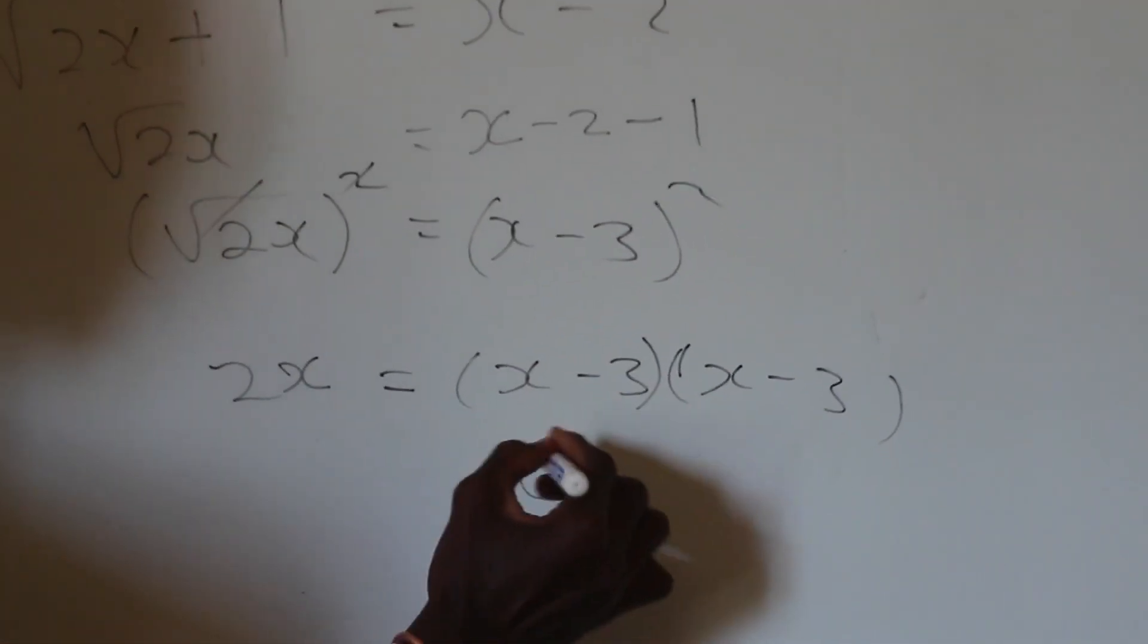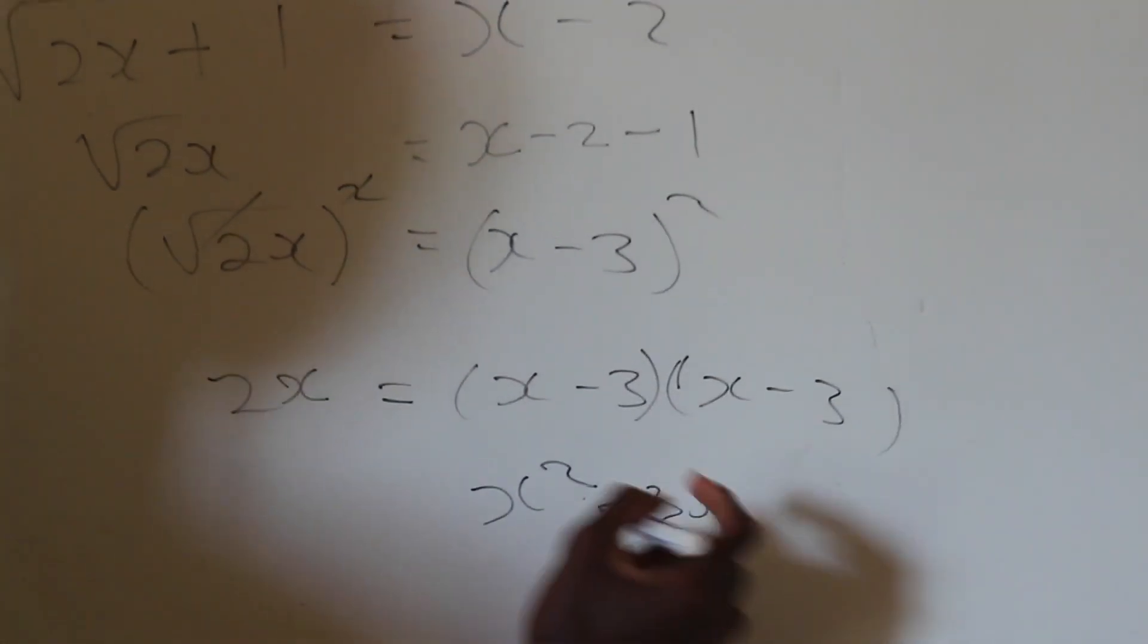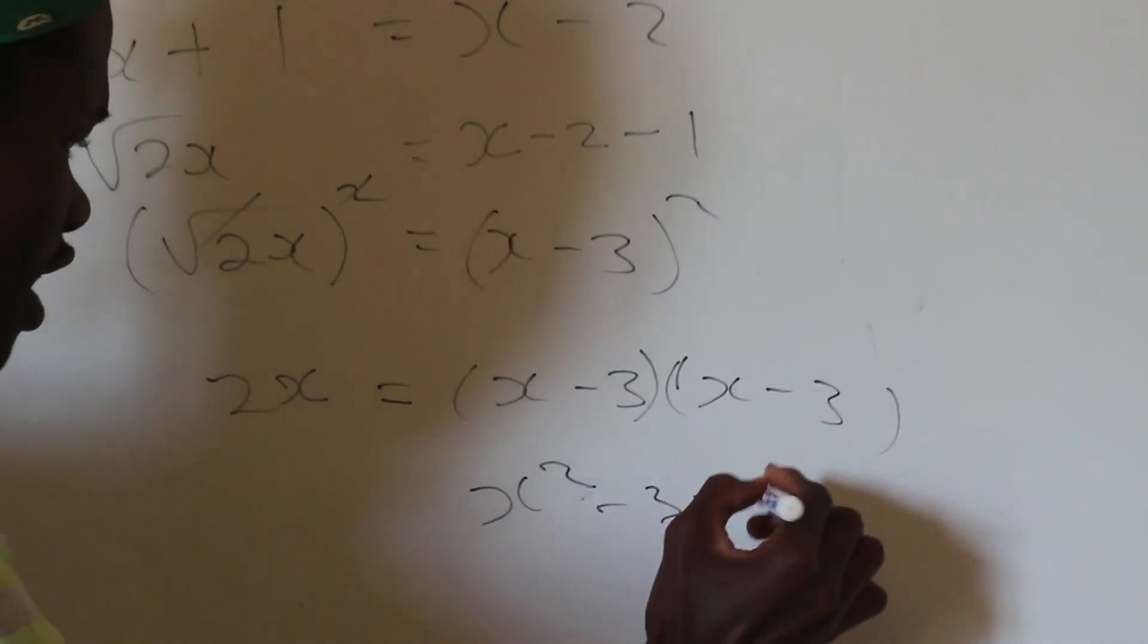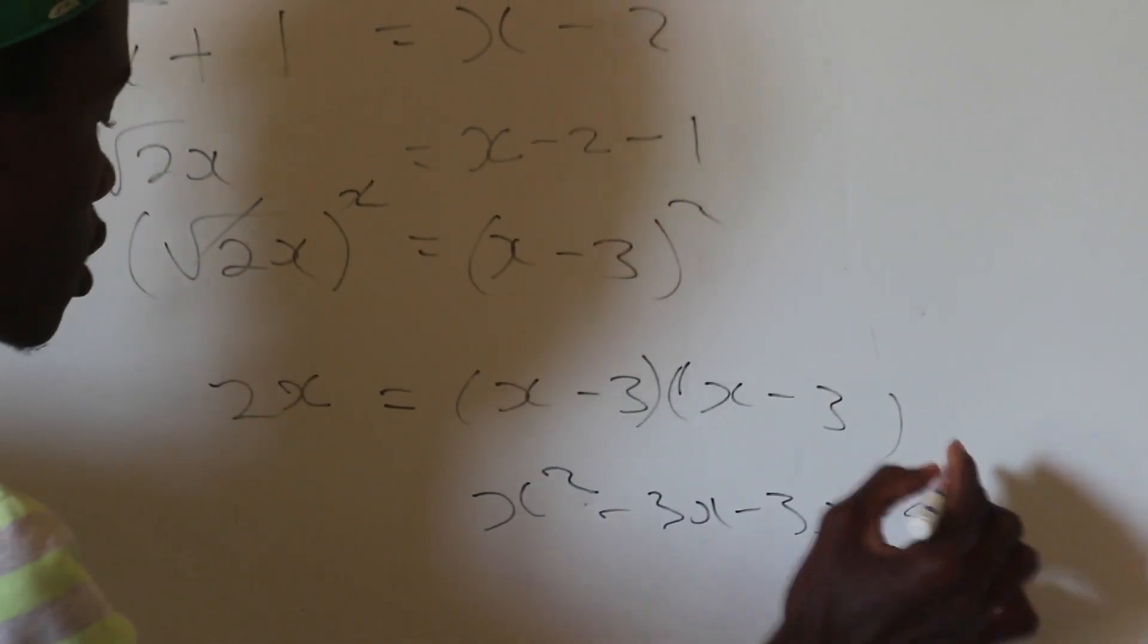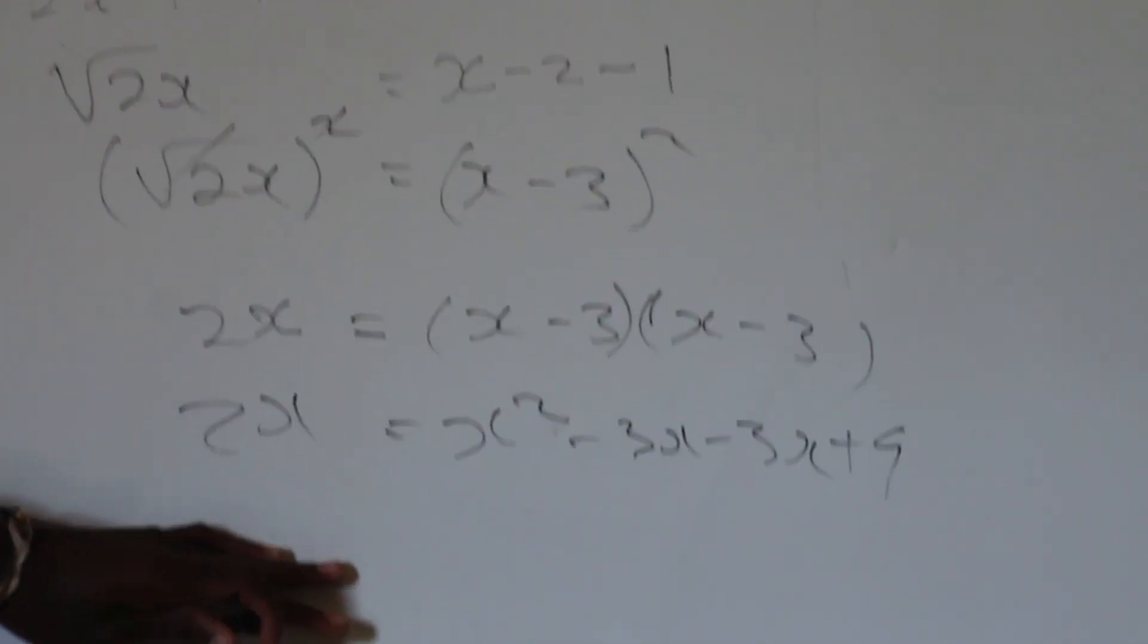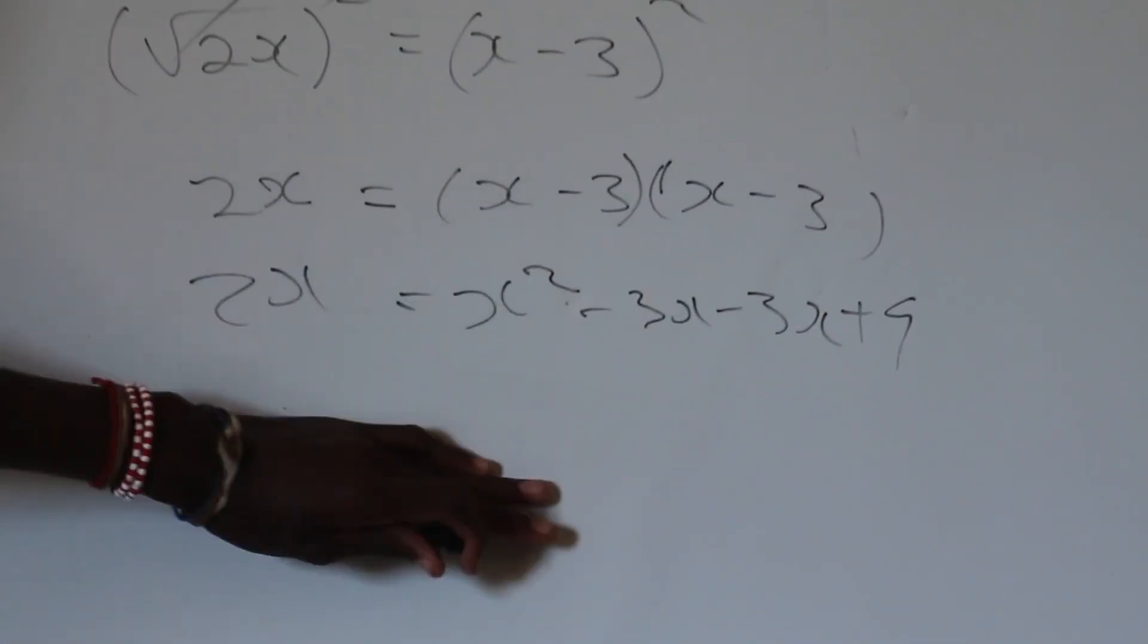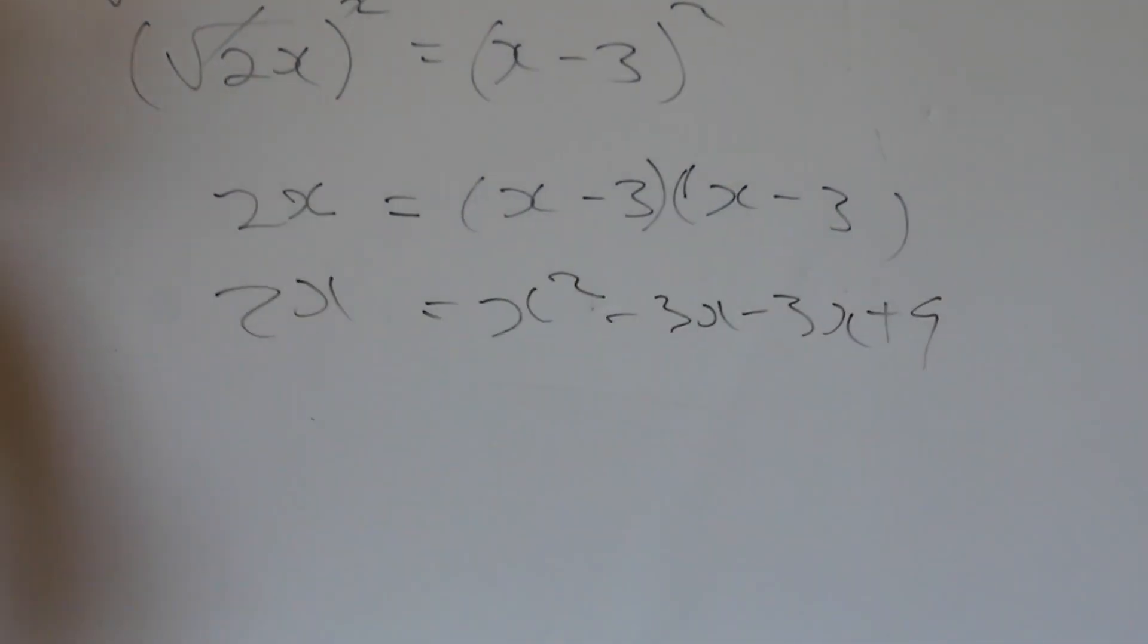Perfect. Then I distribute. When I distribute, I have x squared. Then I have negative 3x. Then I have negative 3x again. Then I have negative 3, positive. 3 times 3 is 9. Then from there, I come to the side 2x. And then all I have to do, guys, from here, I transpose. I'm not going to go on further because it's the same thing. I transpose. Then I group the like terms. And then I equate to 0. And then I use my quadratic formula. Or I factorize using brackets.